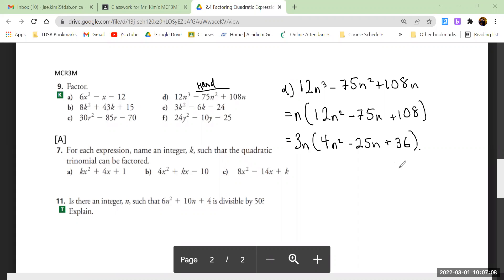Step one: we have two numbers that are going to multiply to 4 times 36. That is 144. But those same two numbers have to add to a negative 25.